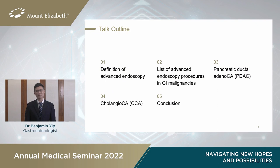This is my talk outline. First, I'll define what advanced endoscopy is, then I'll give a list of advanced endoscopic procedures that are performed commonly in GI malignancies, and then I'll home in on pancreatic ductal adenocarcinoma or PDAC, and I'll touch briefly on cholangiocarcinoma, which I don't have much time for, and then I'll give some concluding remarks.